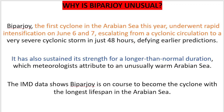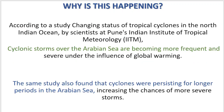Why is this happening? A study was conducted at the Indian Institute of Tropical Meteorology, Pune, which says that cyclonic storms over the Arabian Sea are becoming more frequent and severe. Usually, the Bay of Bengal is warmer than the Arabian Sea. But now the Arabian Sea is also gradually warming up, and the warmer it gets, the more cyclones we will see there.